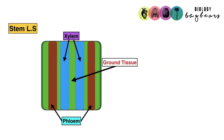This is a longitudinal section of a stem. Just be familiar with it and be able to draw in where the xylem is, where the phloem is, and where the ground tissue is.